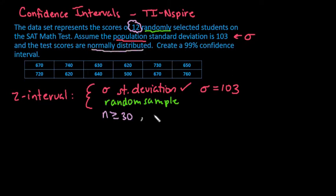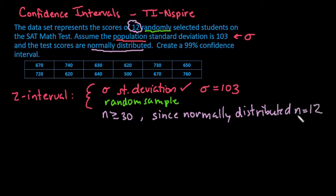So 12 is not large enough for any population, but since it tells us that we can assume it's normally distributed, we're okay. Even though n is not greater than or equal to 30, since it's normally distributed, a sample size of n equals 12 is okay. If it did not say normally distributed, you would not run a z-interval.